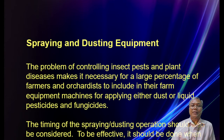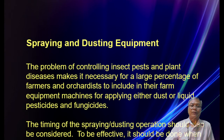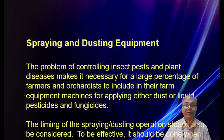Spraying and dusting equipment: the problem of controlling insect pests and plant diseases makes it necessary for farmers and orchardists to have machines for applying dust or liquid pesticides and fungicides. The timing of spraying or dusting should be considered. To be effective, it should be done when the prevailing wind velocity is below 16 kilometers per hour, as higher wind speeds will spread chemicals to neighboring areas.